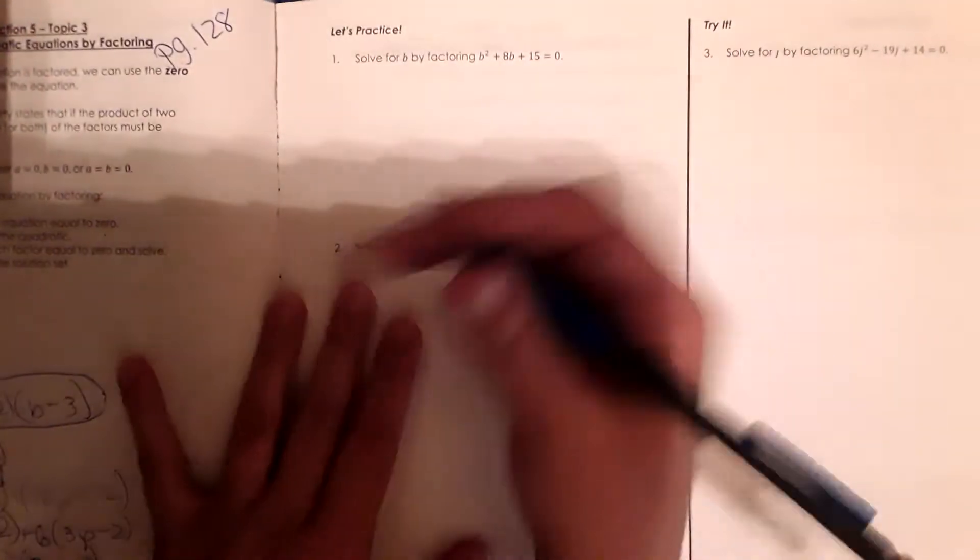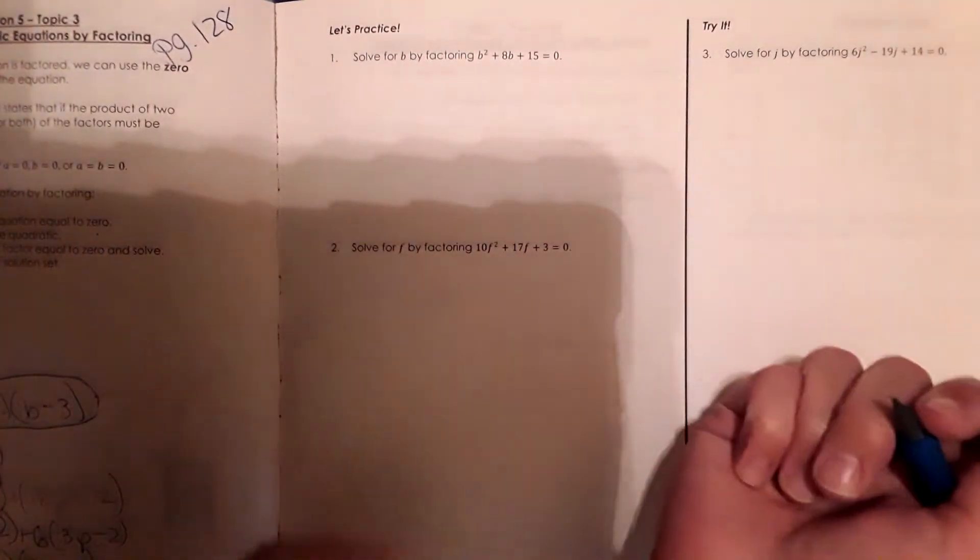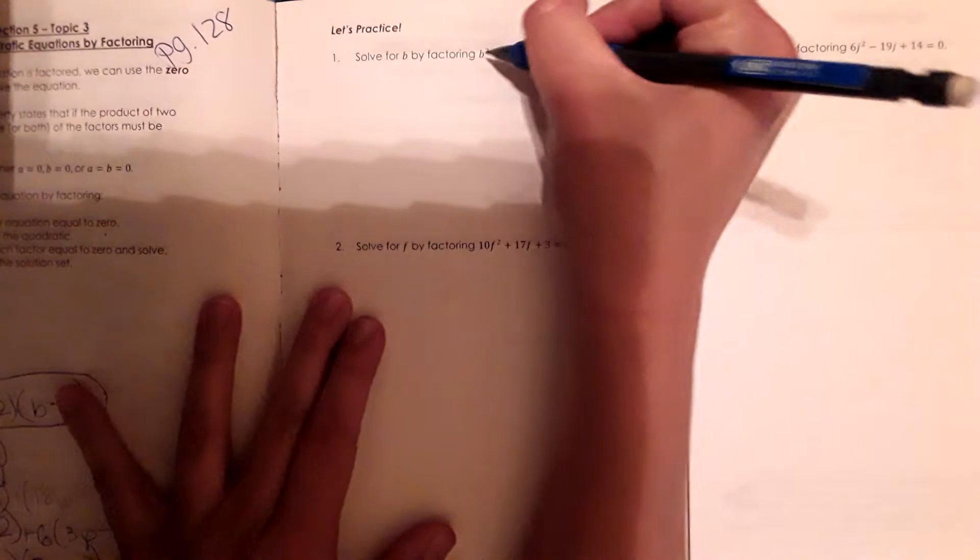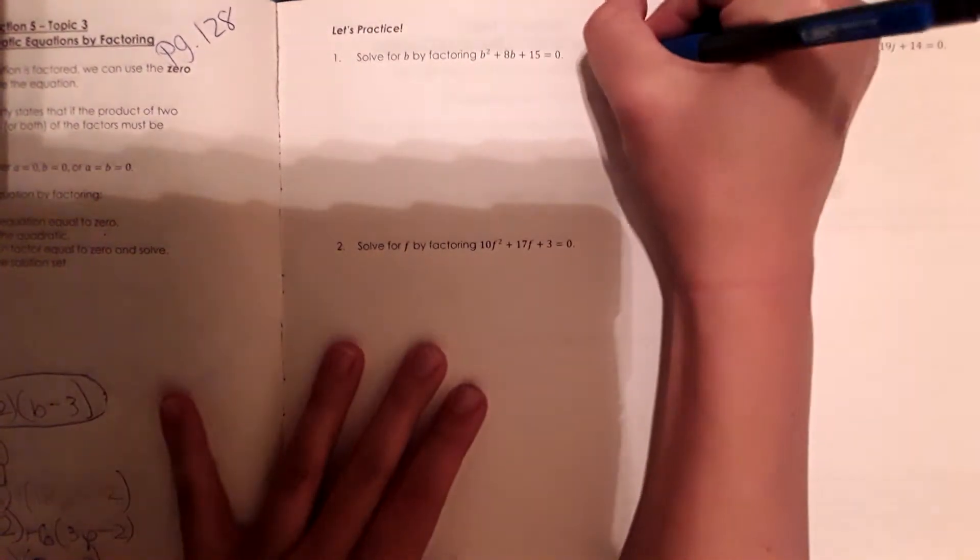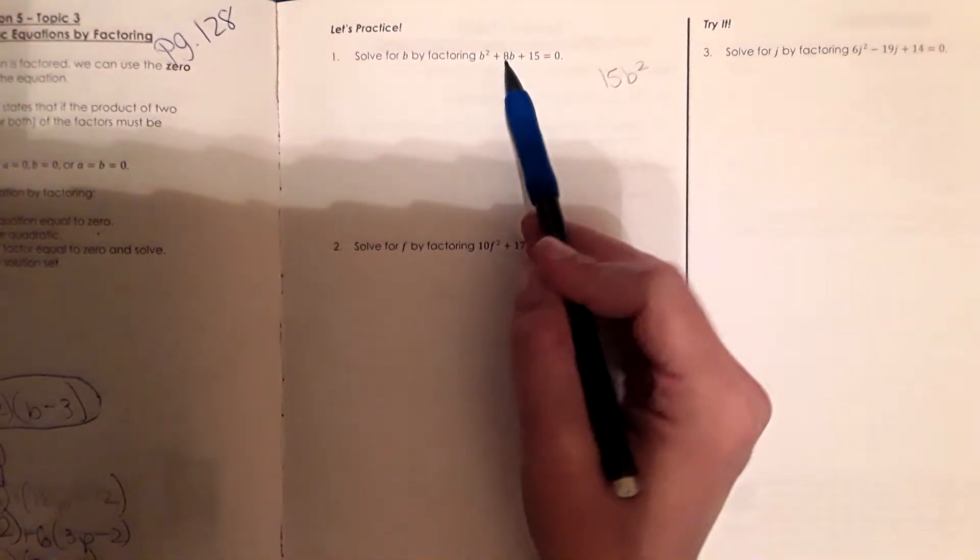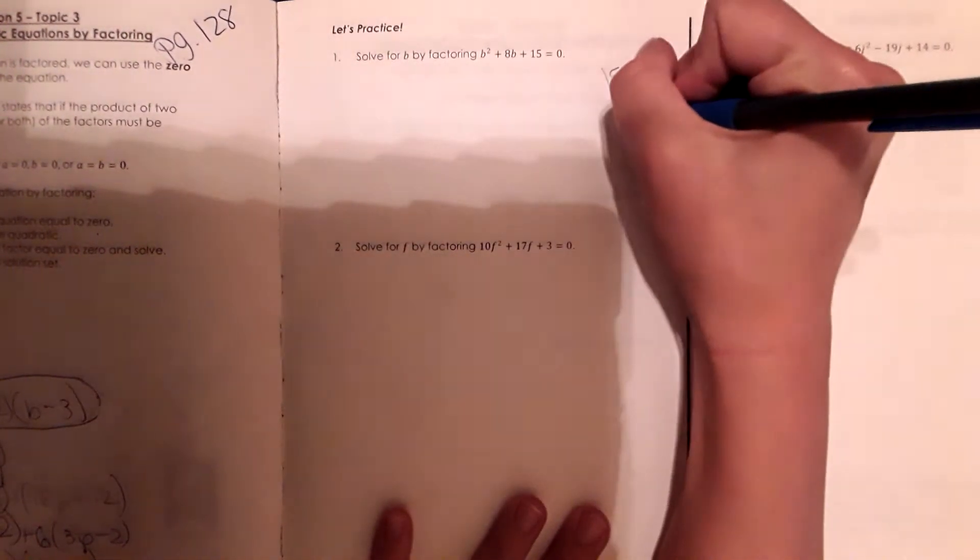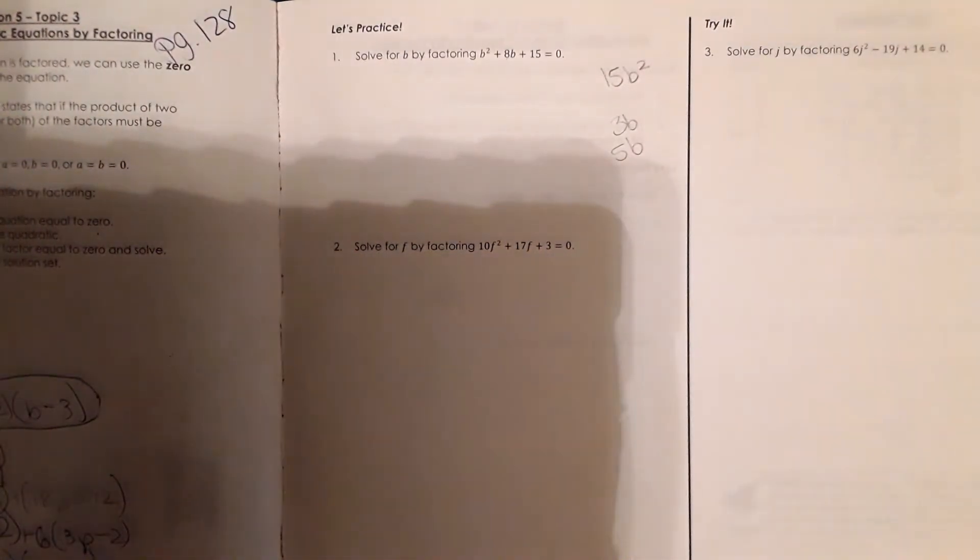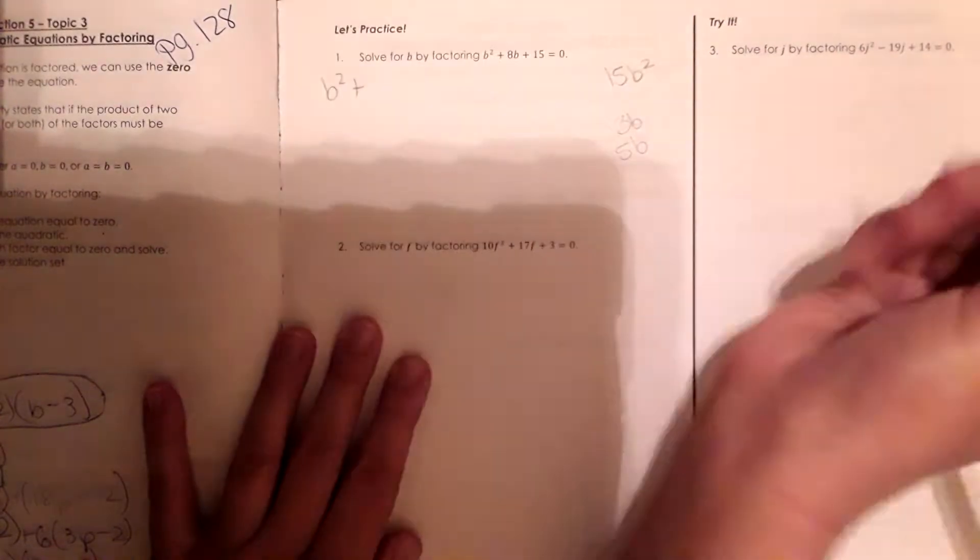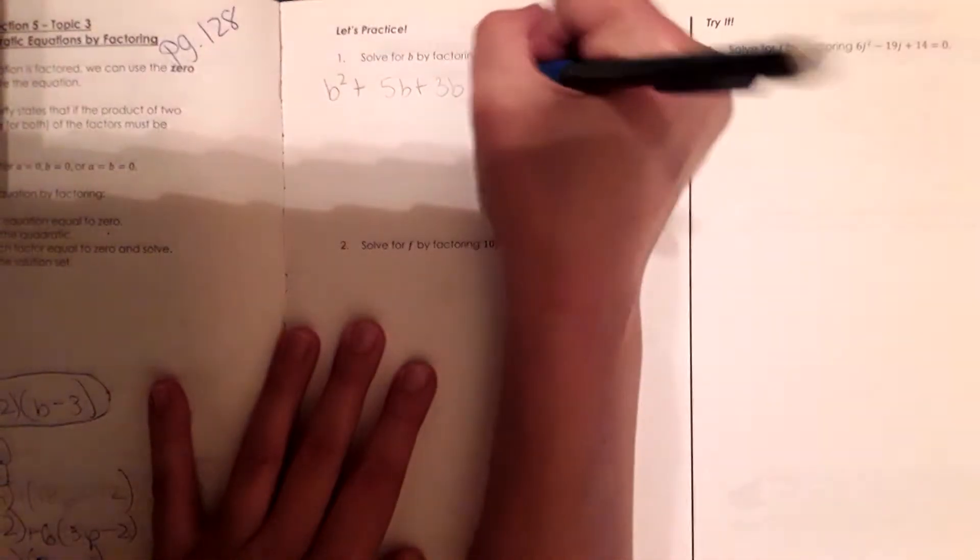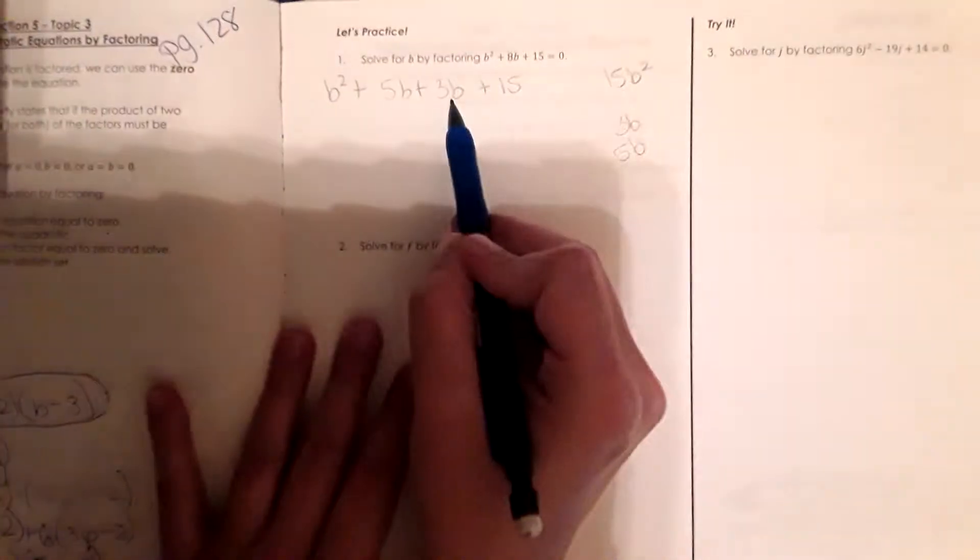For the first one, we are going to stick with the same system that we've been using. What we're going to do is multiply b squared by 15 to get 15 b squared. We need two numbers that multiply to this that add to 8. So that would be 3b and 5b, multiply to 15b squared and add to 8. So now I'm going to split this up, b squared plus 5b plus 3b plus 15. So I just replaced the 8b with these two factors.